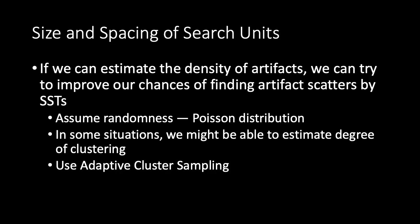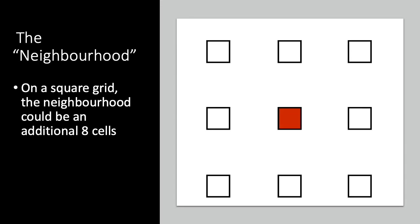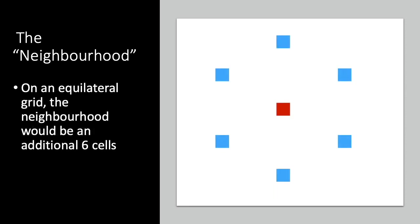Another possible approach to this problem is to use adaptive cluster sampling. This depends on the concept of a neighborhood. For example, on a square grid, we could define the neighborhood of the red square as being the eight white squares that surround it. On an equilateral triangular grid, the neighborhood of the red square would be the six blue squares.